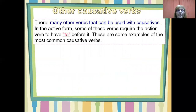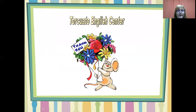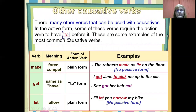Other causative verbs. There are many other verbs that can be used with causatives. In the active form, some of these verbs require the action verb to have 'to' before it. These are some examples of the most common causative verbs — verb, meaning, form of action verb, and examples. For example, 'make' — the meaning of 'make' in this context is force, compel. The form of the action verb is the plain form. Example: the robbers made us lie on the floor.